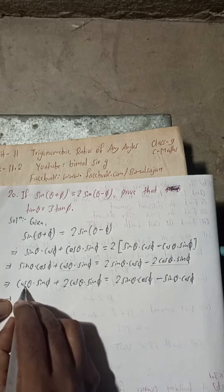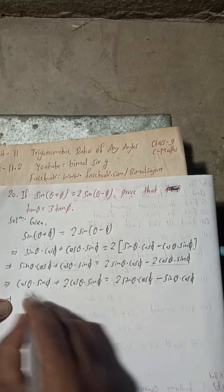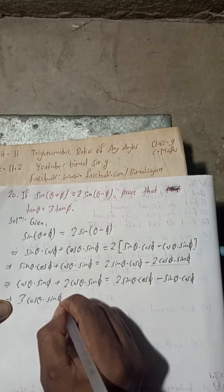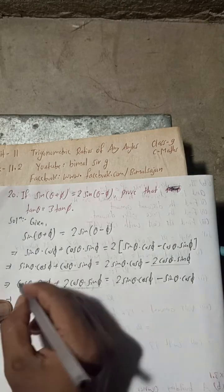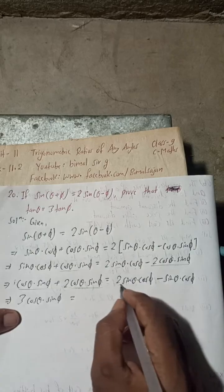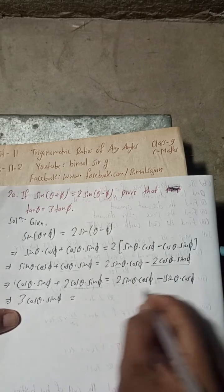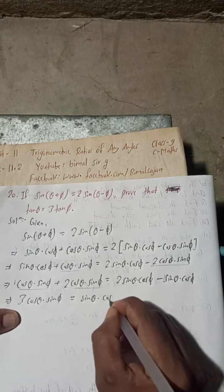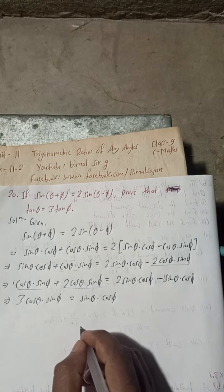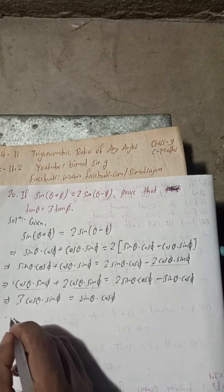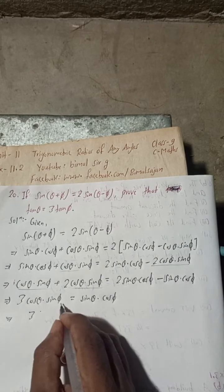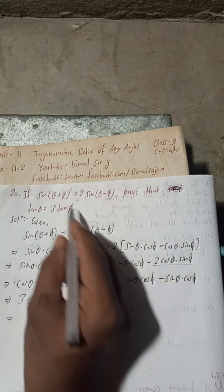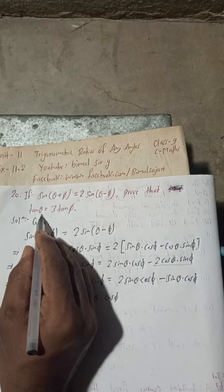Combining like terms: on the left side we get 3 cos theta sine phi, and on the right side we get 1 sine theta cos phi. So this implies 3 cos theta sine phi equals sine theta cos phi.